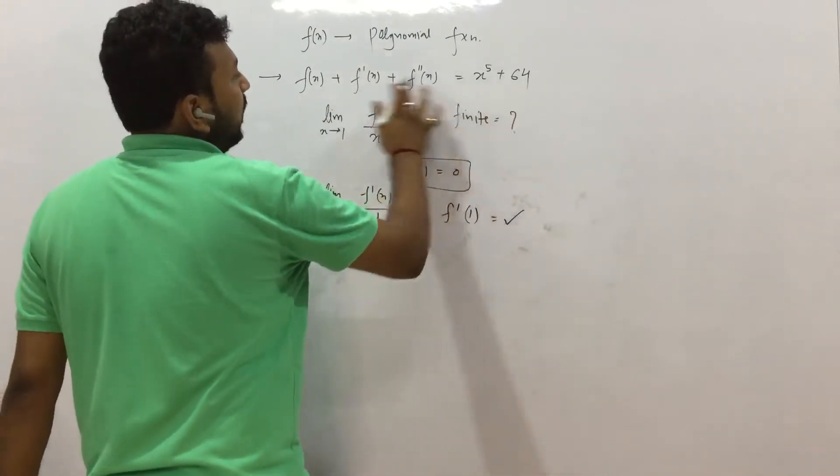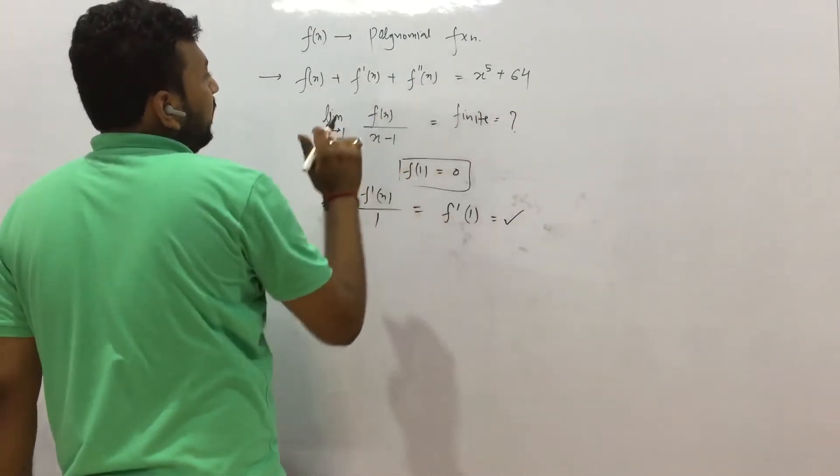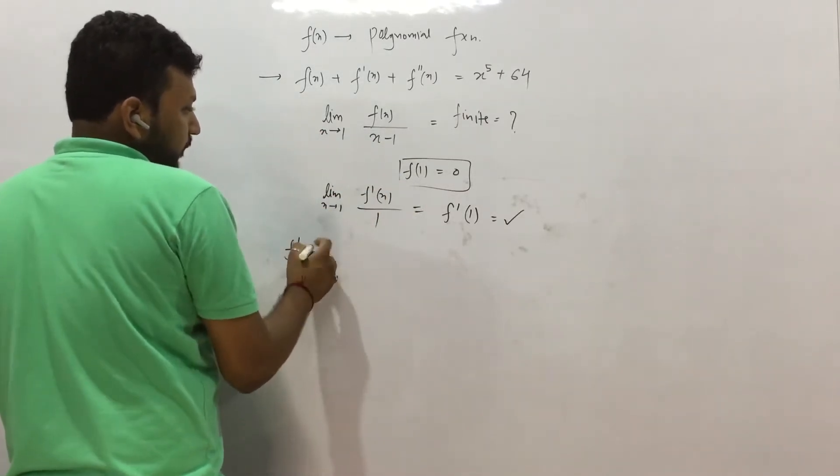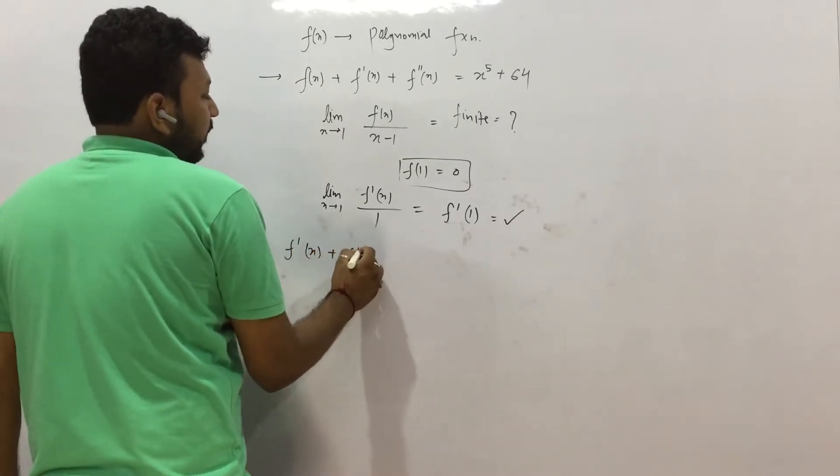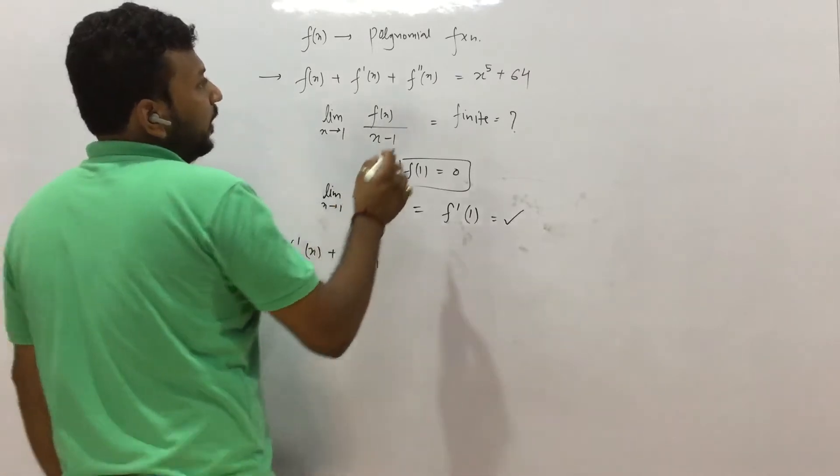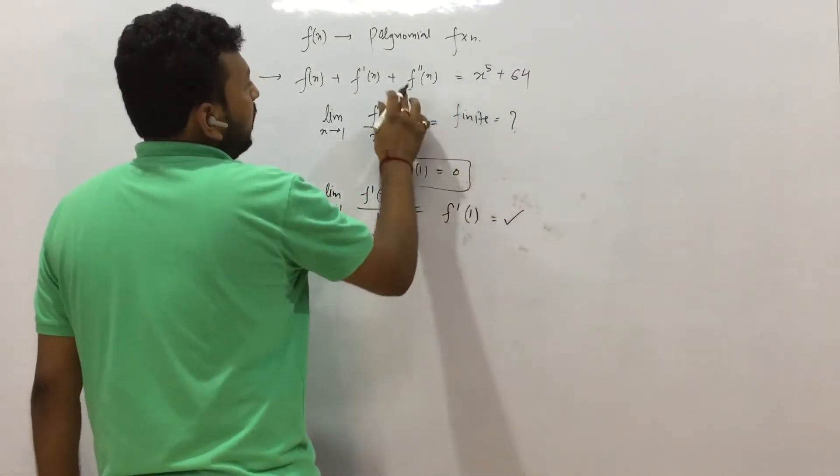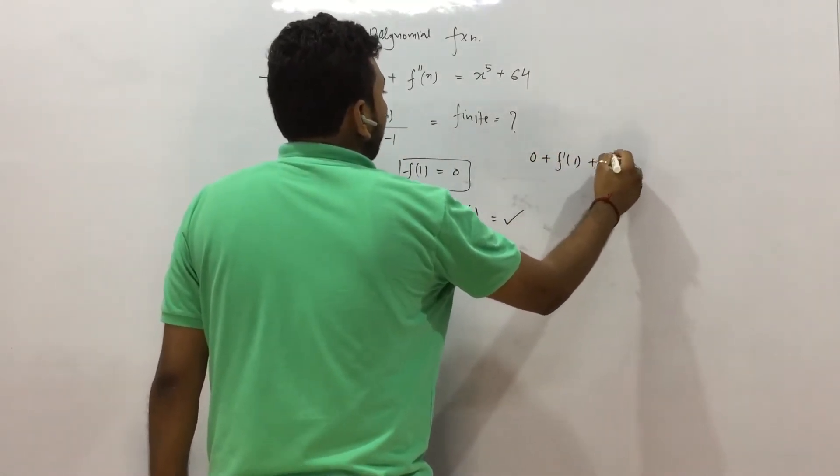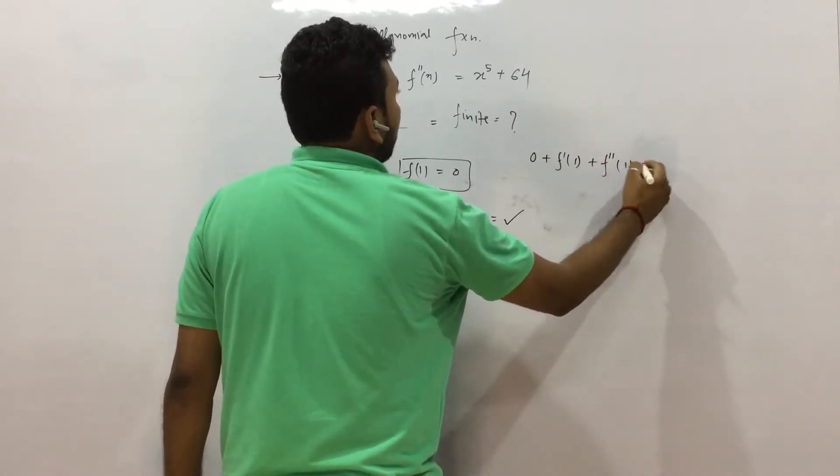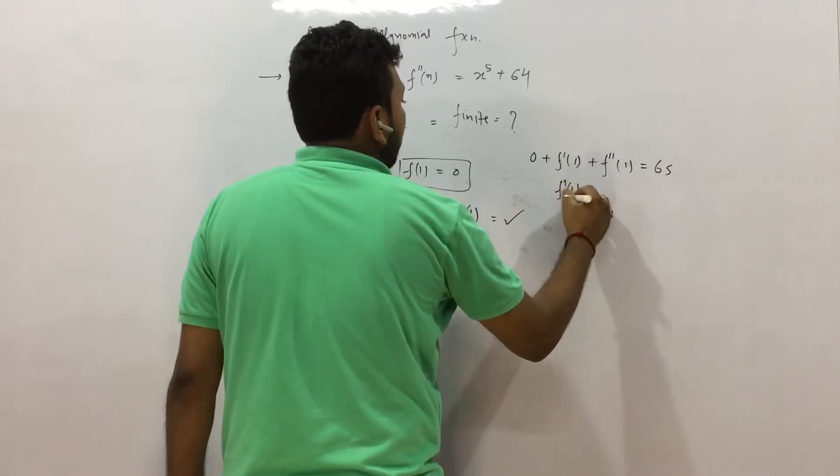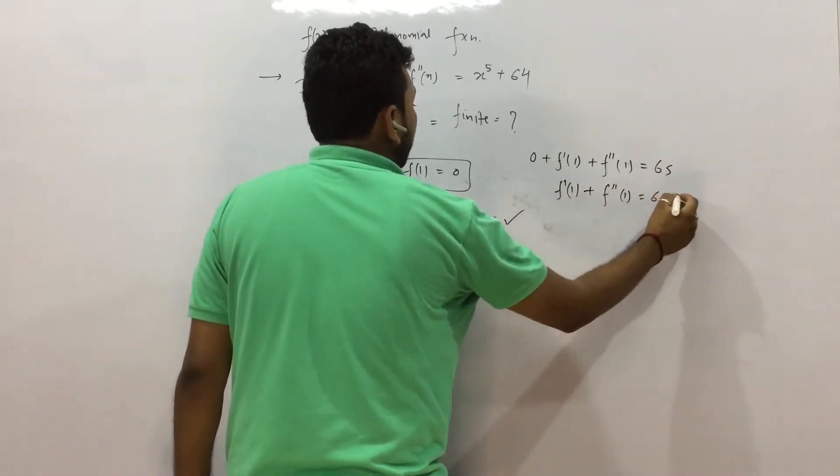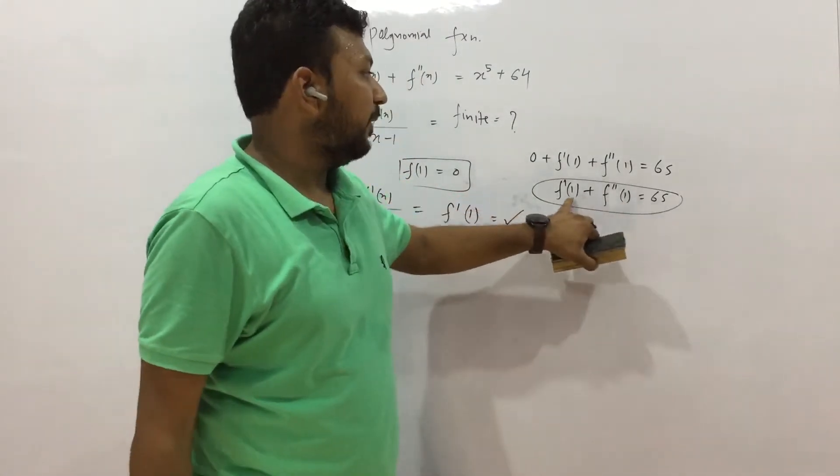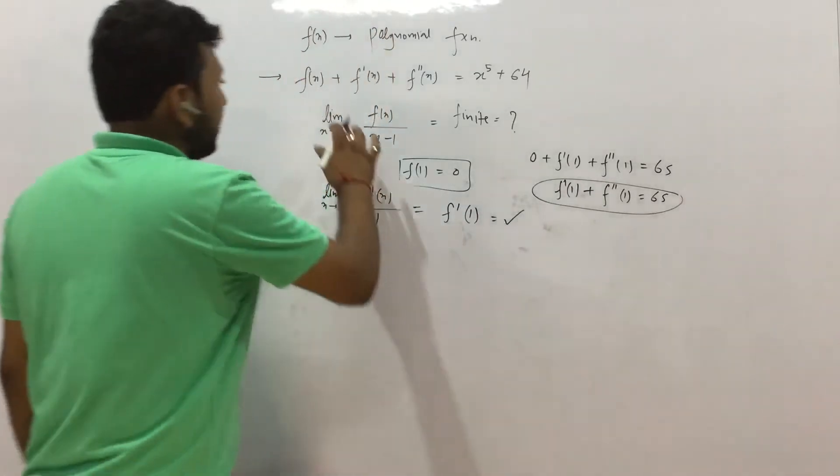And f'(x) will be of the power x^4, and similarly f''(x) is equal to x^3 and so on. The degrees will decrease. So highest degree is of f(x) and that is x^5. This information we are able to get here. So let us do the derivative here. If we do the derivative, what do we have? We have f'(1), f'(x) + f''(x).